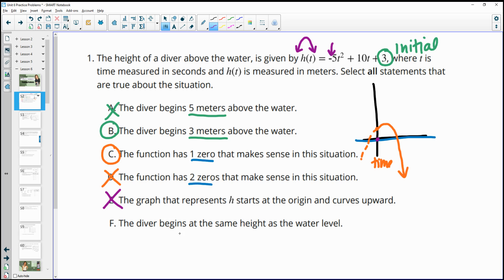Then F says the diver begins at the same height as the water level, which is not true. This one shows that the diver is starting three meters above the water. So they're on some type of platform, a diving board or something, right? A diving board, a dock, a bridge, whatever. And then they're jumping off of that. So they are not on the ground. So this one is not true either.